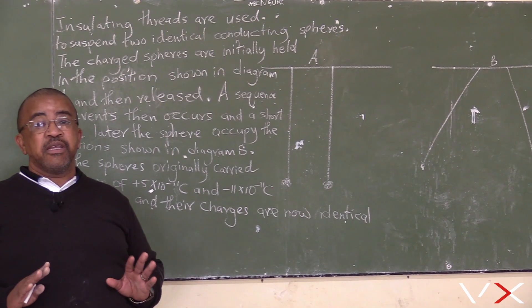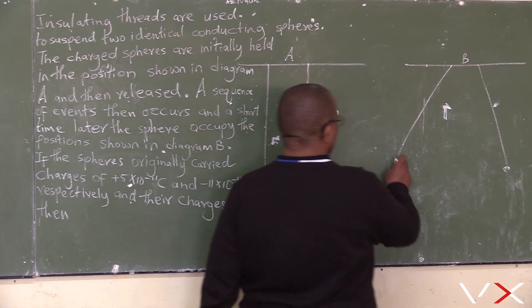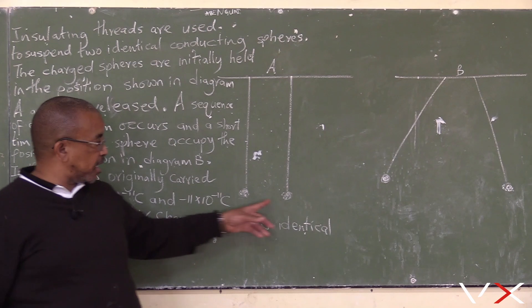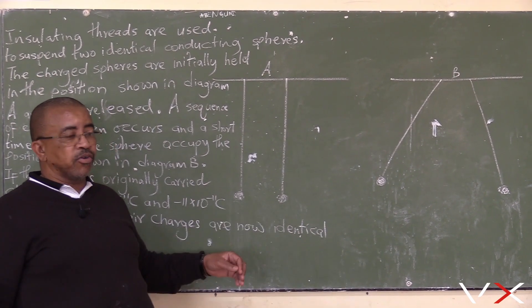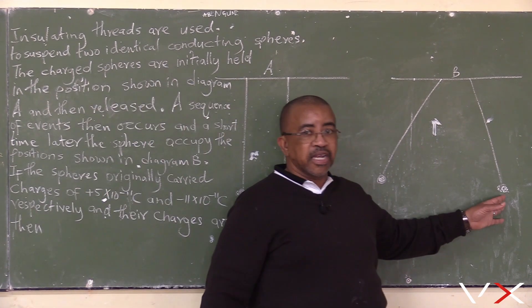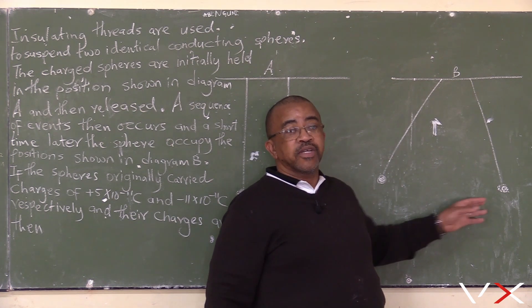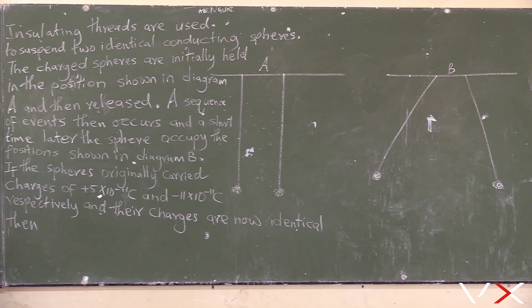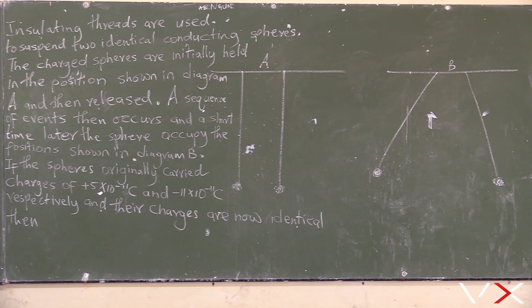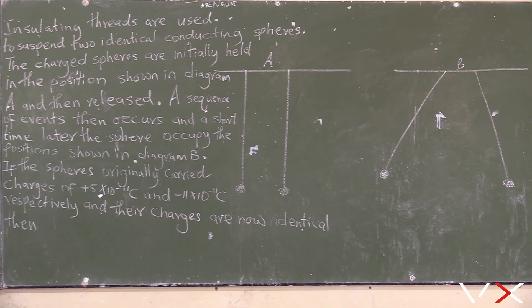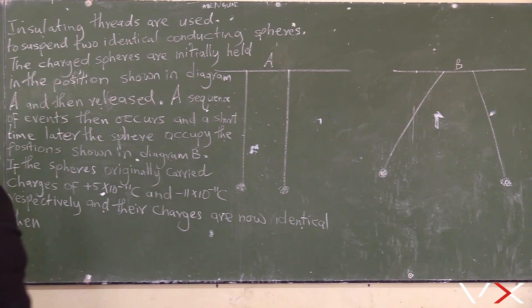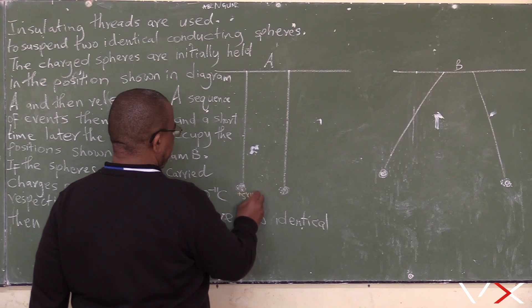From the position shown at P, the factors are the same as shown with the figure. Now, if the spheres originally carried a charge of plus five times ten to the power minus eleven coulombs and minus eleven times ten to the power minus eleven coulombs.